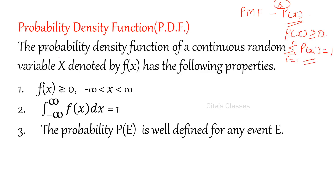In continuous random variable, we use the probability density function. There it is mass function; here it is density function. The probability density function for a continuous random variable x, denoted by f of x, is defined such that f of x should satisfy two conditions. One is f of x greater than or equal to 0 — the same as in discrete.